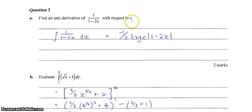Moving on, find an anti-derivative of 1 on 1 minus 2x. So using the proper notation, we'll take out a negative 1 on 2 out the front and we'll write log of 1 minus 2x, not forgetting our modular signs. You'll notice I don't have a plus c here. It's not needed seeing as we've been asked for an anti-derivative. Pretty straightforward question.